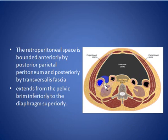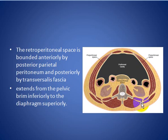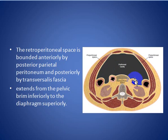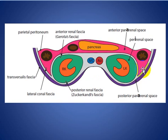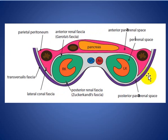The retroperitoneal space is a space bounded anteriorly by the posterior parietal peritoneum, as we see here, and posteriorly by the transverse fascia. It extends from the pelvic brim inferiorly to the diaphragm superiorly. Here you see the peritoneal cavity, and posterior to the peritoneal cavity is the retroperitoneal space. This is the posterior parietal peritoneum and the posterior transverse fascia, and it contains three spaces, as we will discuss.